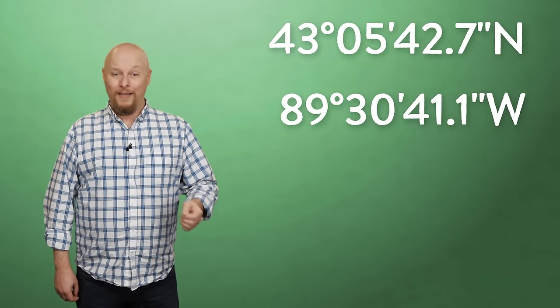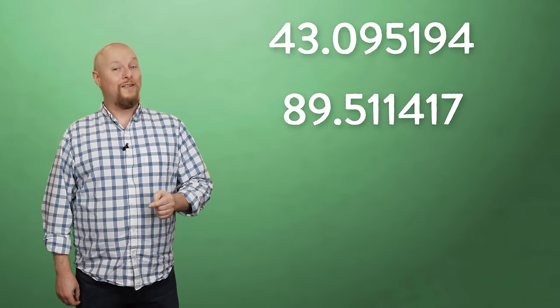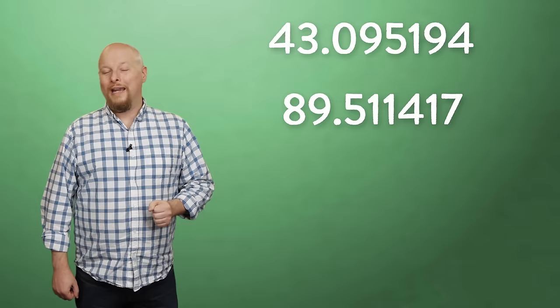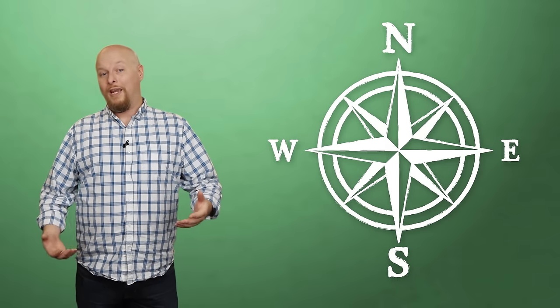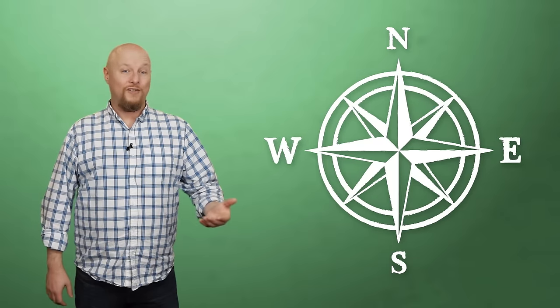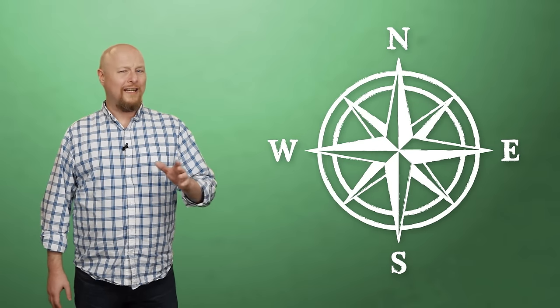When you see a set of geographic coordinates looking like this, or like this, you're reading latitude and longitude. Latitude represents north-south location, and longitude represents east-west location, usually listed in that order. By combining them, you can pinpoint any spot on the surface of the Earth.